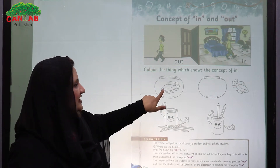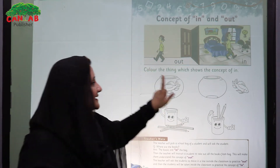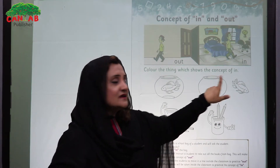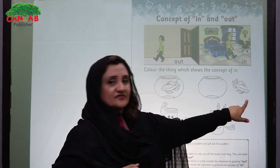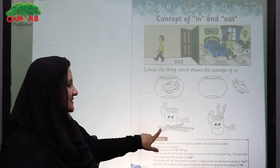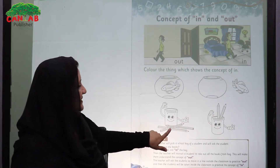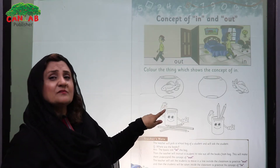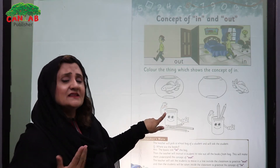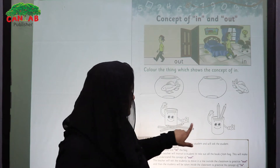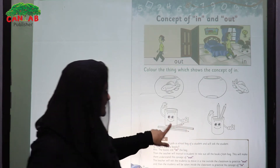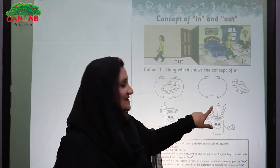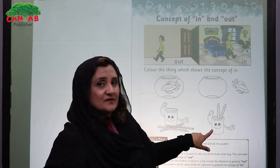Where is the fish? It is in the jar. Now where is the fish? It is out of the jar. Where are the pencils? The pencils are in the cup. And now the pencils are out of the cup. And here the pencils are in the cup.